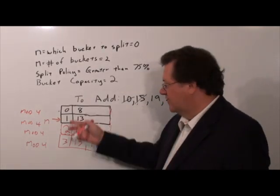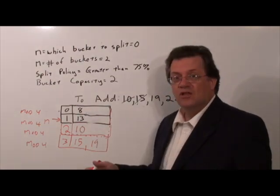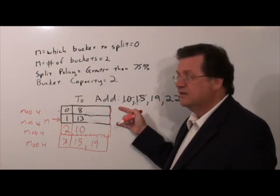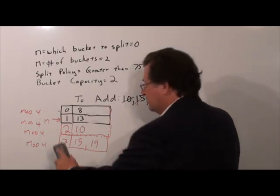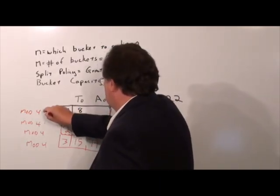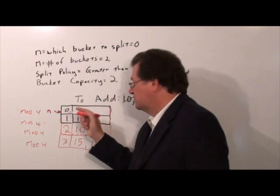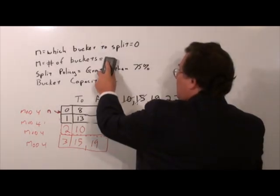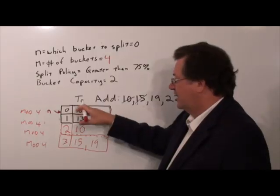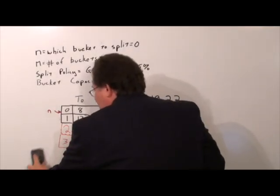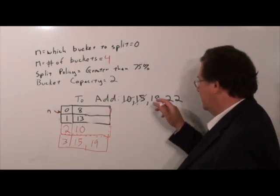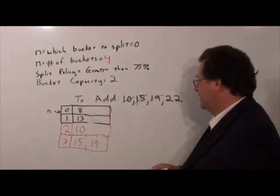Now look at what we've done: we've gone through n equals 0 and n equals 1 — we've gone through all the values of n because we initially started with two slots. What we do is reset n back to 0. The number of buckets, since we've exhausted them, literally doubles, and we're going to be working with mod 4 all the way through. So we've added 19 — now let's add 22.